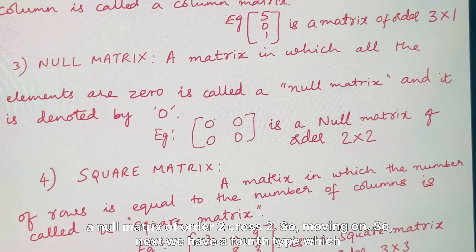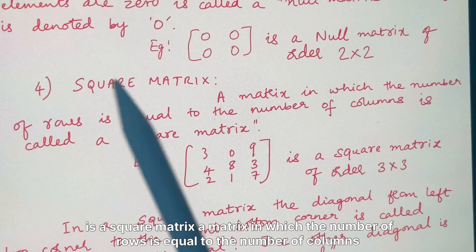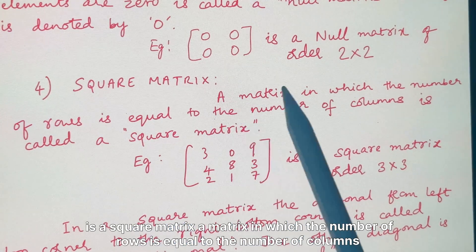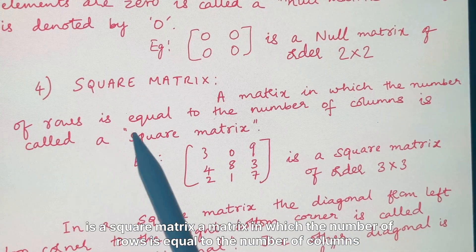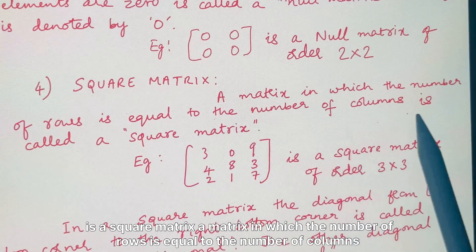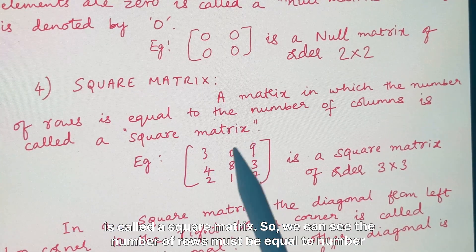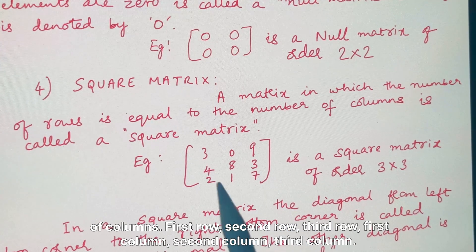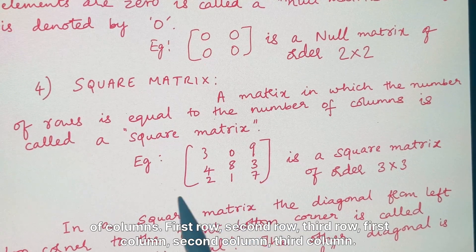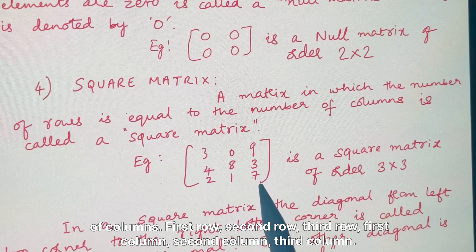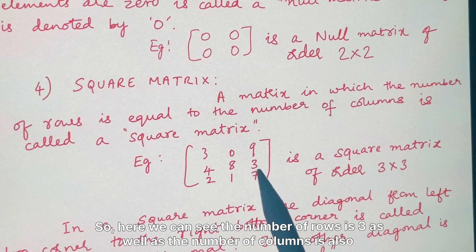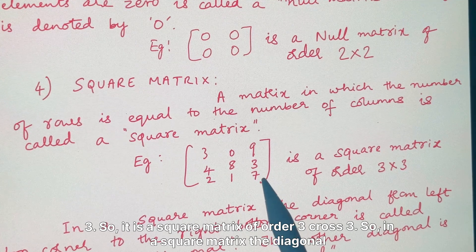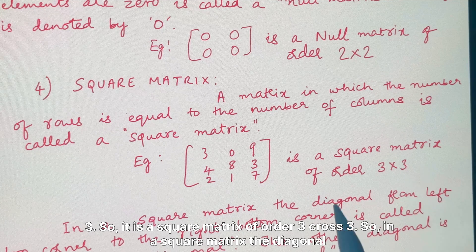The fourth type is a square matrix — a matrix in which the number of rows is equal to the number of columns is called a square matrix. Here we can see the number of rows is 3 as well as the number of columns is 3, so it is a square matrix of order 3 cross 3.